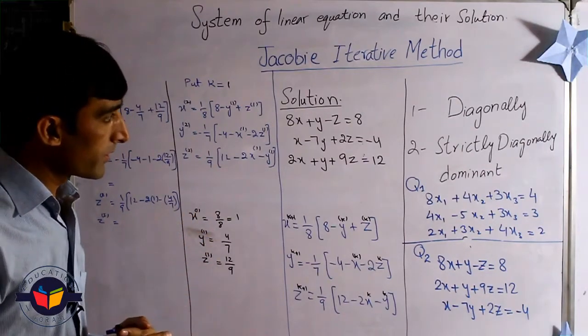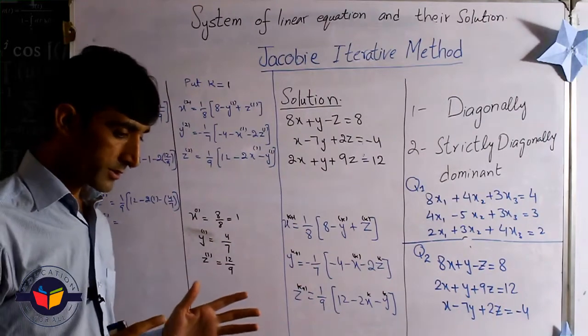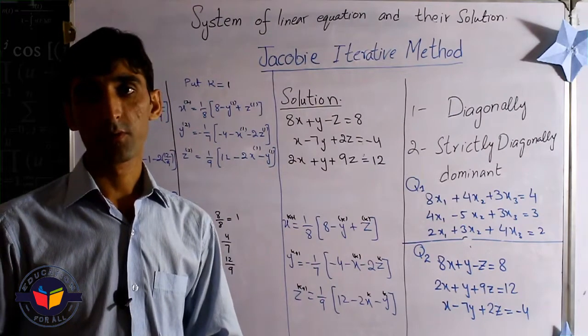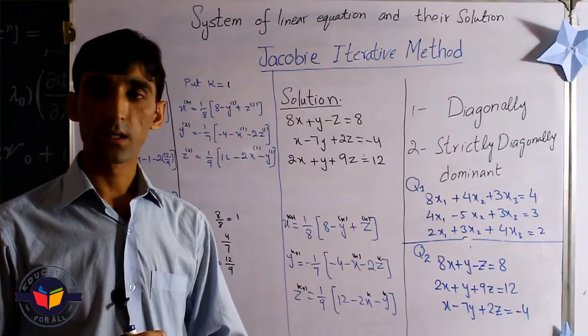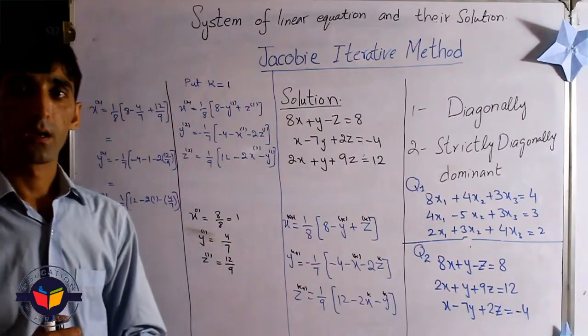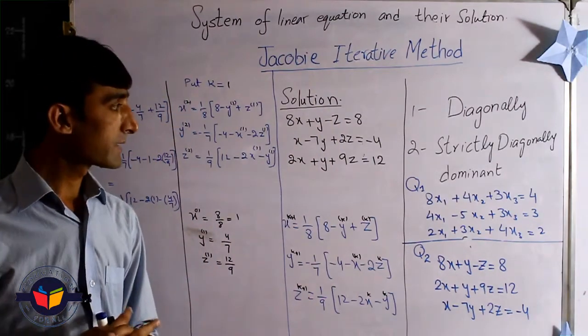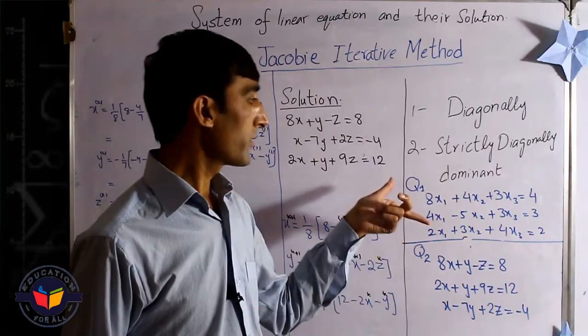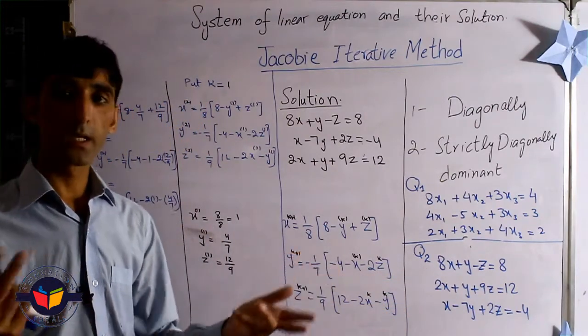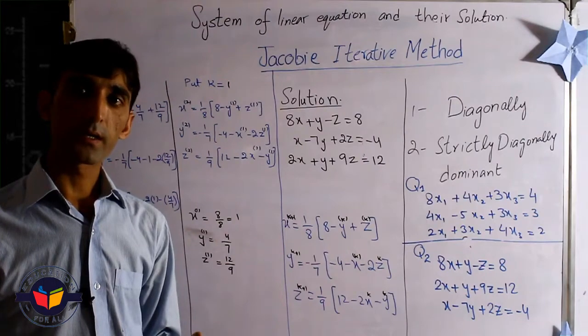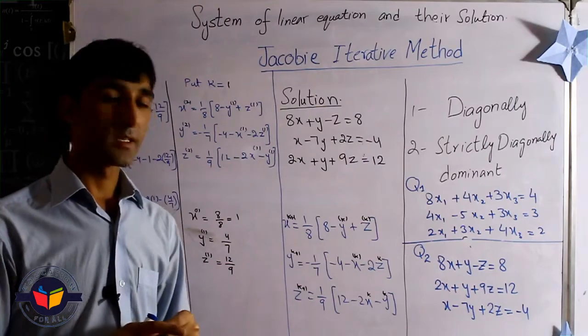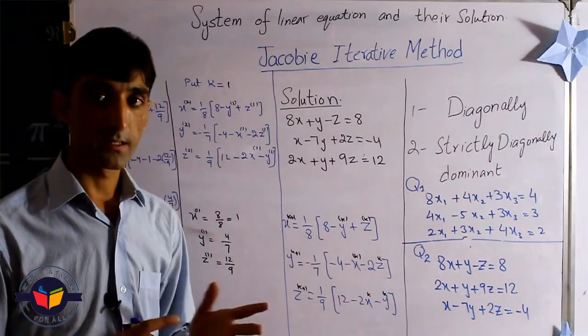First of all we want to know where we can use the Jacobi method and what is the limitation of the Jacobi Iterative Method. There is a very simple way: if our given system of equations is diagonally dominant, not only diagonally dominant but strictly diagonally dominant, in that case we use the Jacobi Iterative Method.